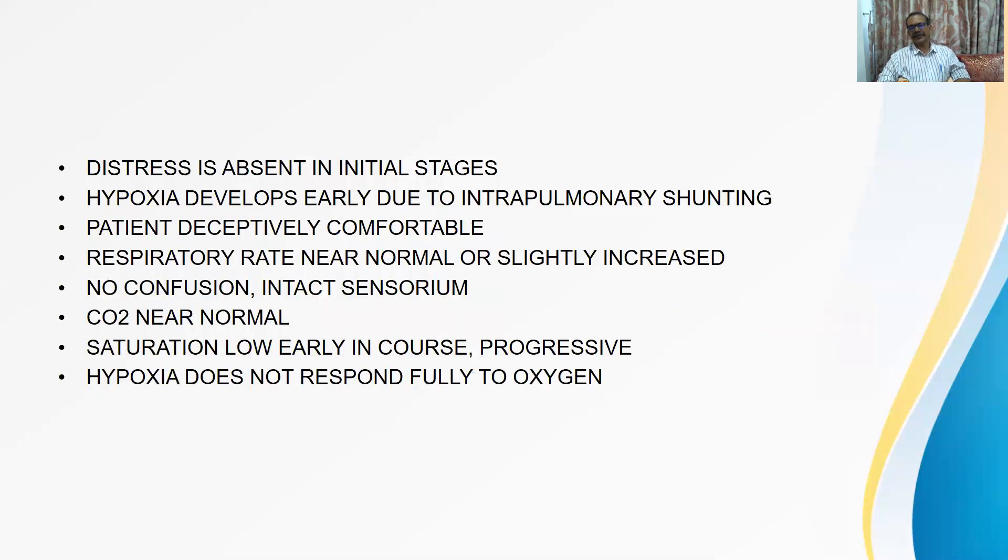Let us see what happens clinically. Now this is most important part all of us have to understand that distress is absent in initial stages. Distress is absent, but hypoxia is early. Why hypoxia is early? Because intrapulmonary shunts are there. Why intrapulmonary shunts are there? There is no hypoxic local vasoconstriction. Why it is not there? Because of leukotrienes. Leukotrienes, why they are there? Because a lot of cells are inside the alveolus which are producing leukotrienes. So this early hypoxia and no distress, this peculiar particular combination delays the diagnosis.